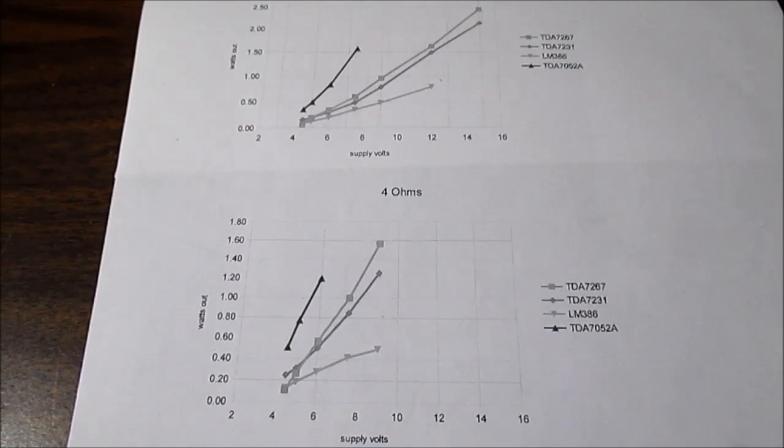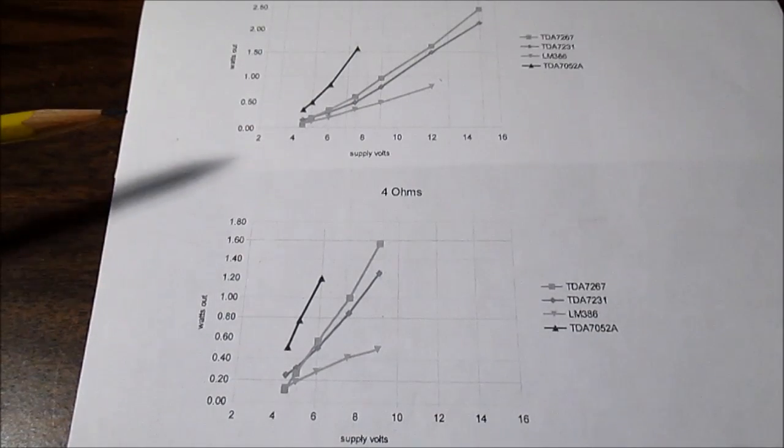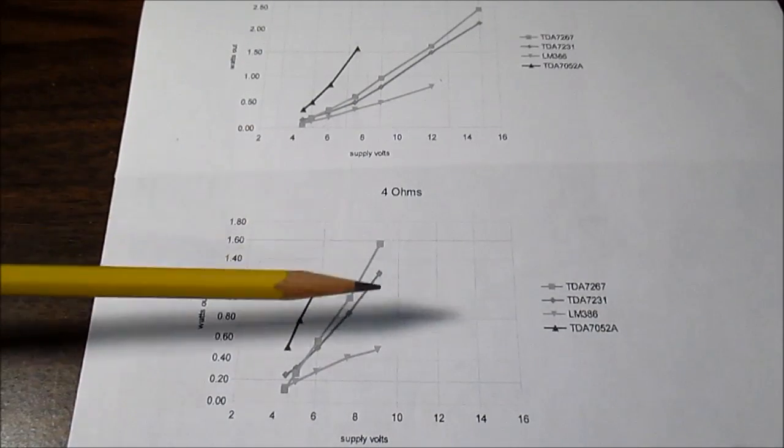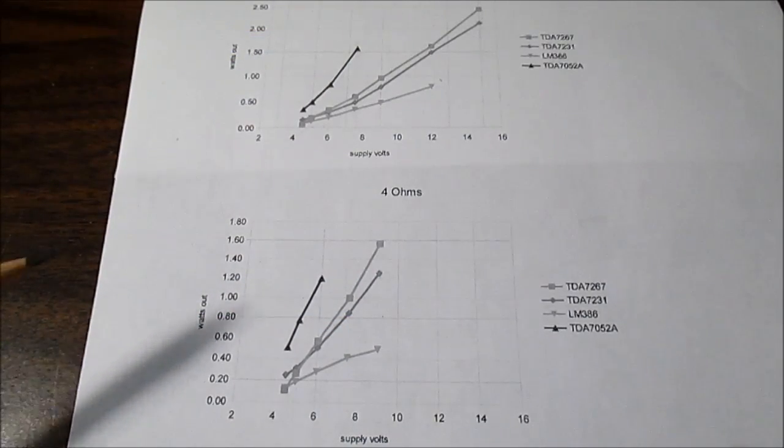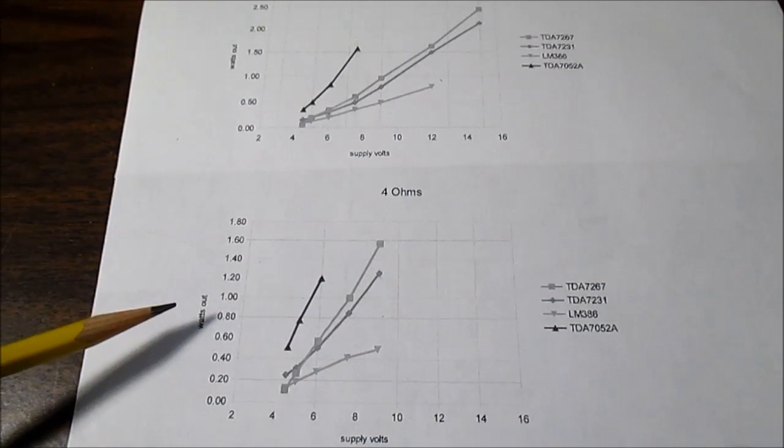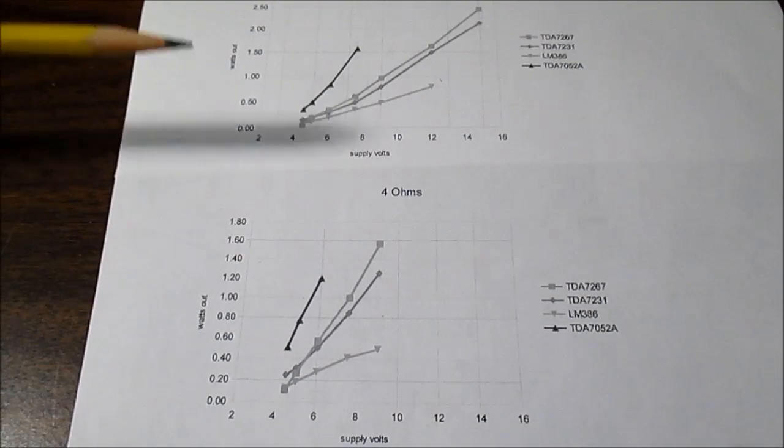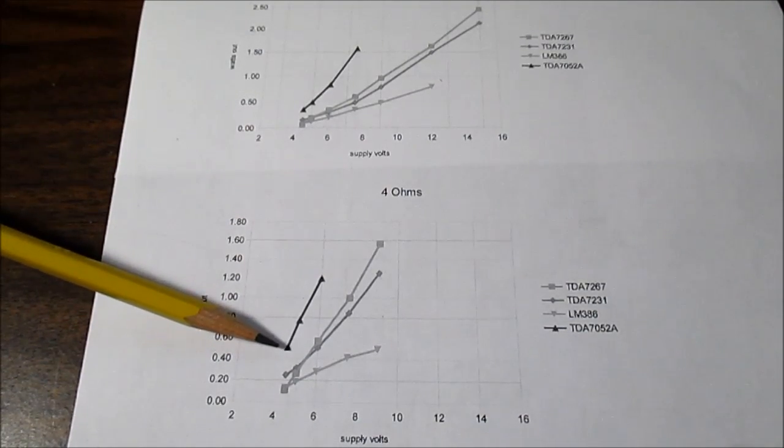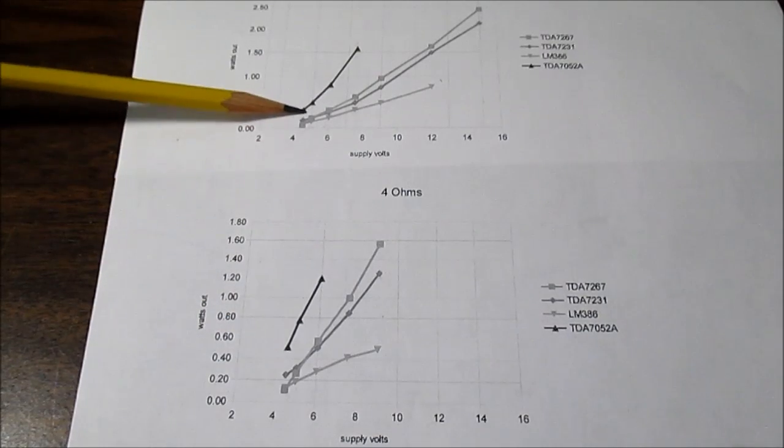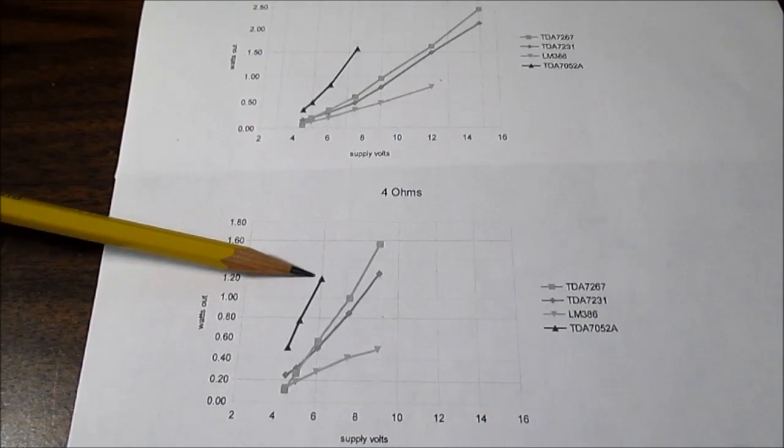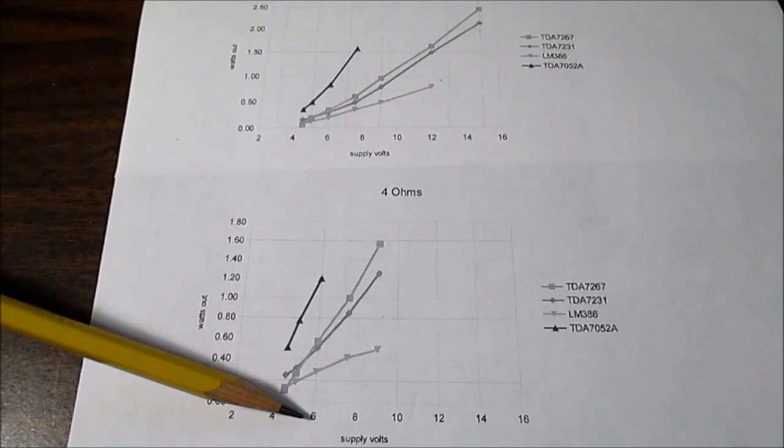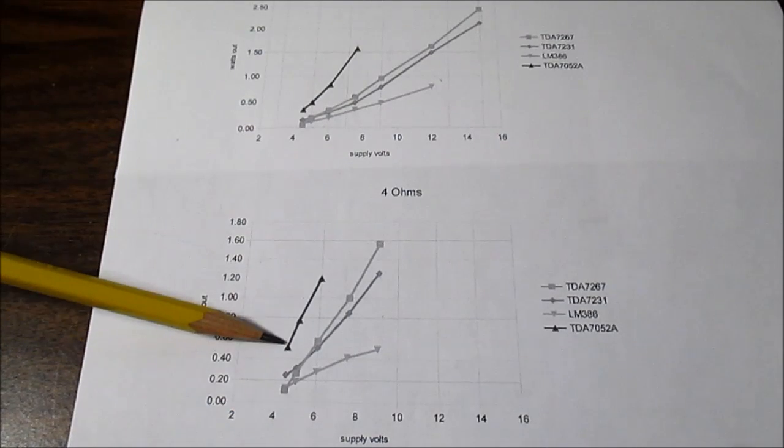I'm back with the results. I made some graphs, and I have some numbers which I will reveal momentarily. This here is the 4 ohm measurements. Up here are the 8 ohm measurements. X axis is the supply voltage. Y axis is the output power. So you can see here the TDA 7052. Because it is a bridge amplifier, it has much higher output than the other chip amps at lower supply voltages.